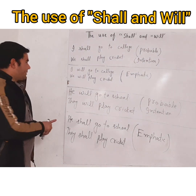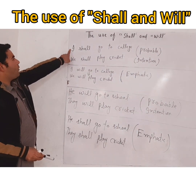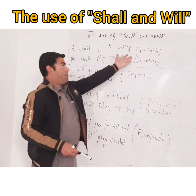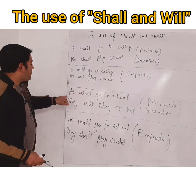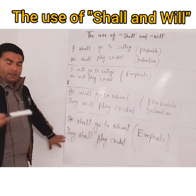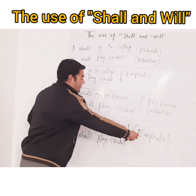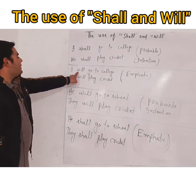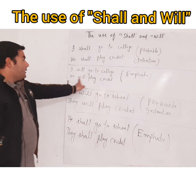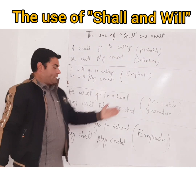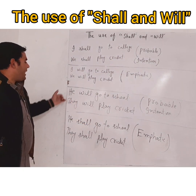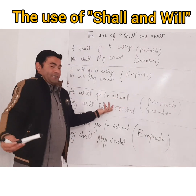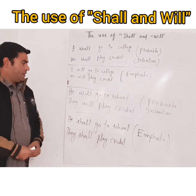So it's completely opposite: when you use 'shall' with 'I' and 'we', it is probable and just intention. But when you use 'shall' with he, they, and other subjects, the sentences become emphatic. And when we use 'will' with 'we' and 'I', it's an emphatic situation. When you use 'will' with he, they, you, etc., they are just probable conditions and just intention.